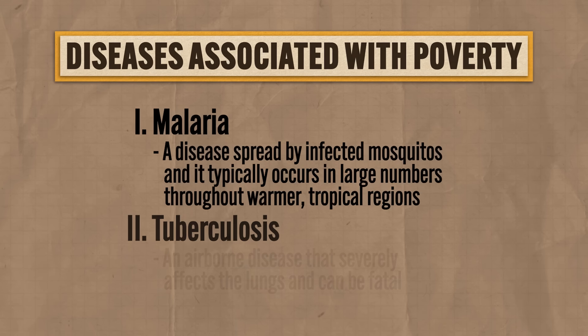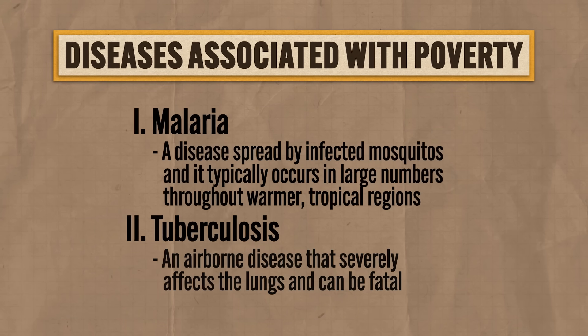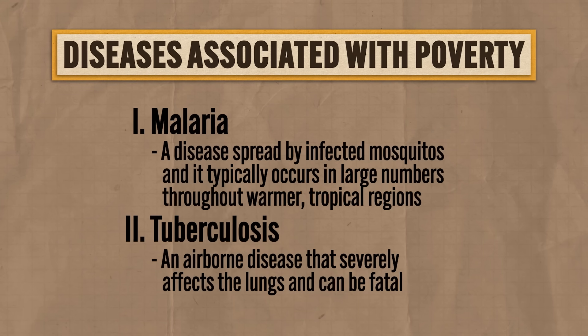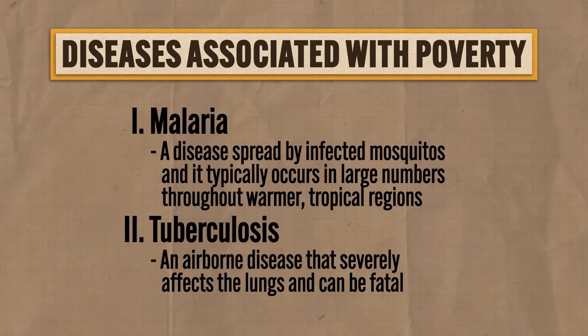The second is tuberculosis, which is an airborne disease that severely affects the lungs and can be fatal. A cure was developed at the end of the 19th century, but access to this intervention is disproportionately favoring wealthy countries, which is why TB remains a disease associated with poverty.